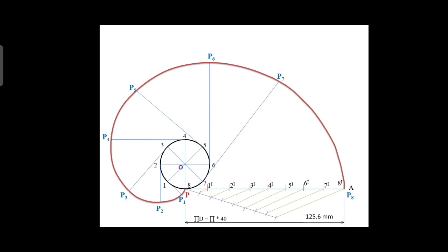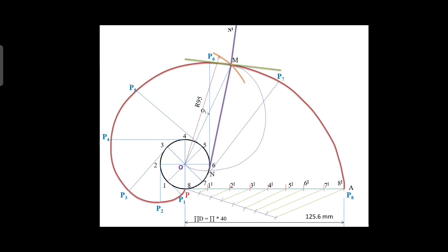Next, we are going to draw a normal and tangent from the center of the circle at a distance of 95 mm. From point O, take 95 mm as radius and draw an arc on the involute curve — the intersecting point is M. Join O and M. Then locate the midpoint of line OM — that point is O1. With O1 as center and O1M as radius, draw a semicircle. The semicircle intersects the original circle — note that intersecting point as N. Then join N and M and extend the line — this is the normal line. Draw a tangent line through M perpendicular to the normal line. The tangent line is named TT dash.